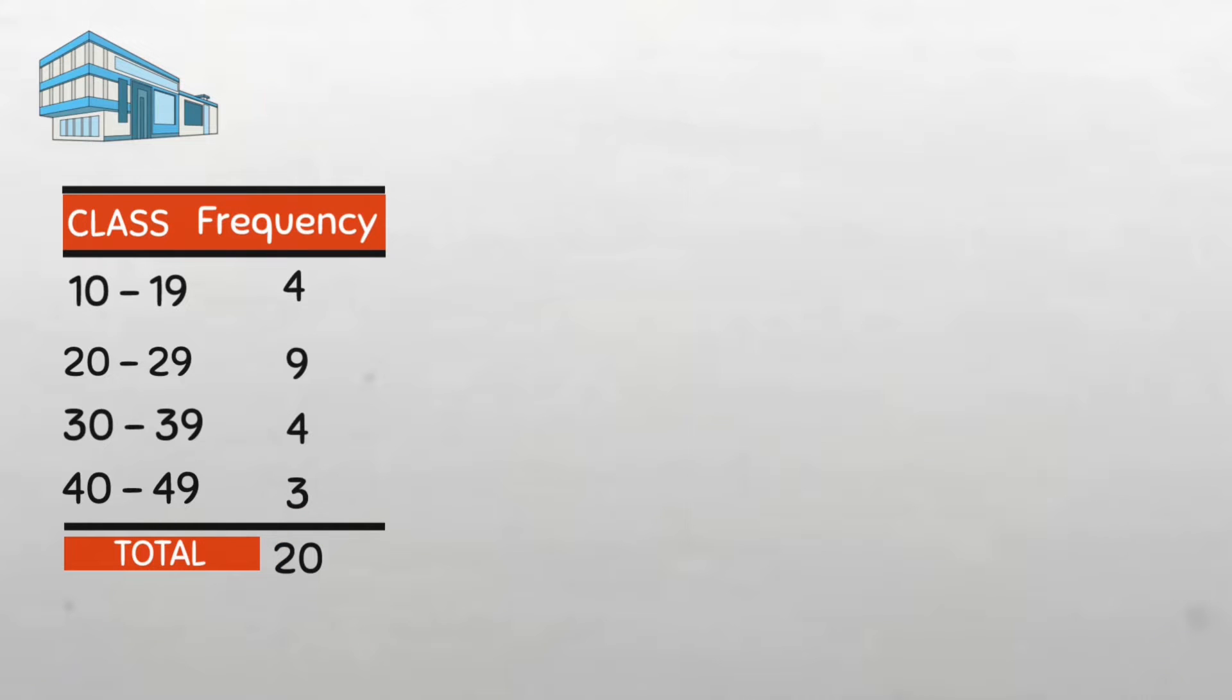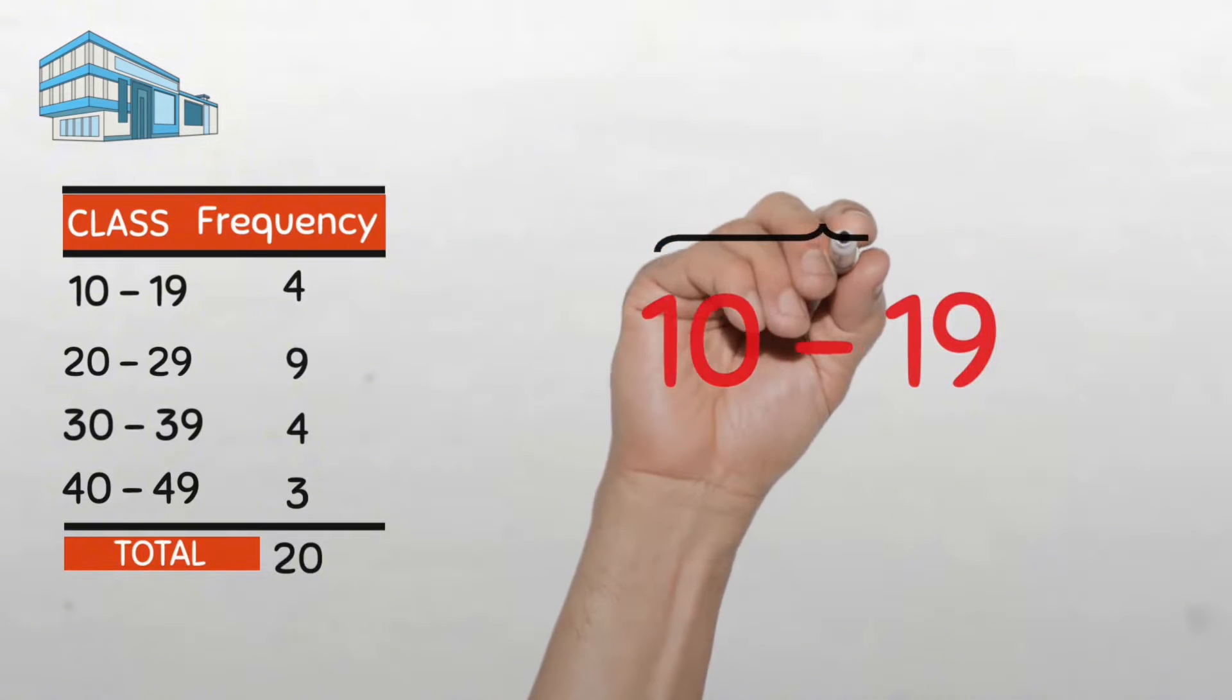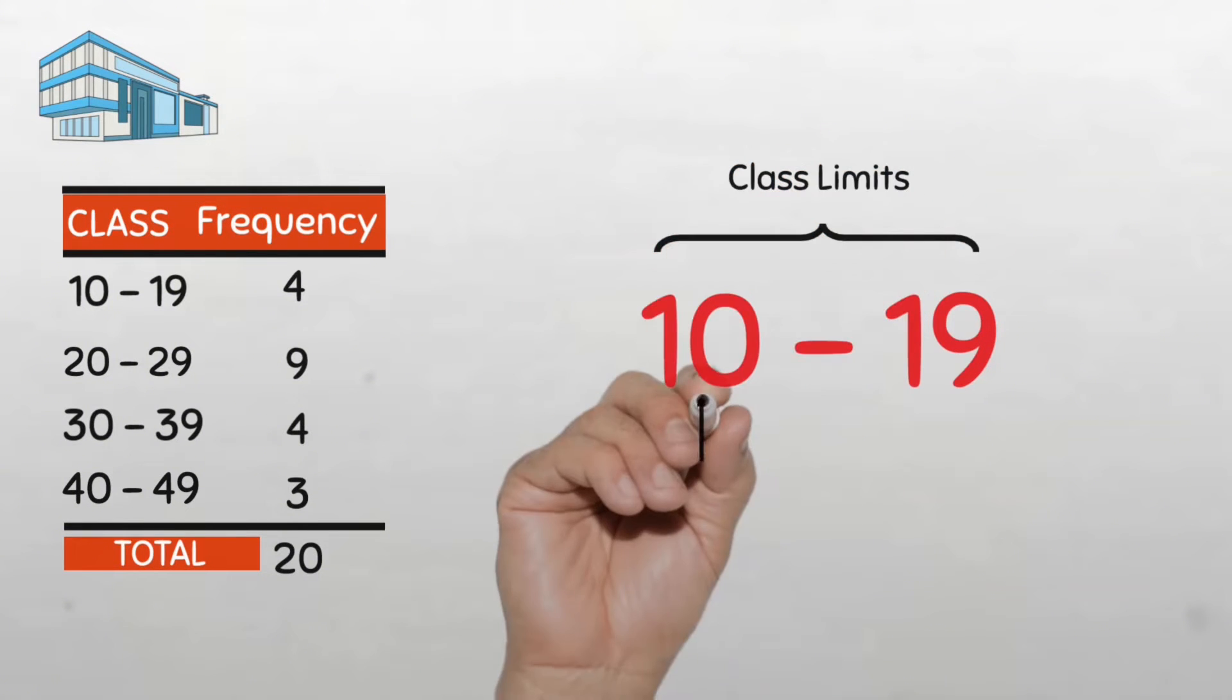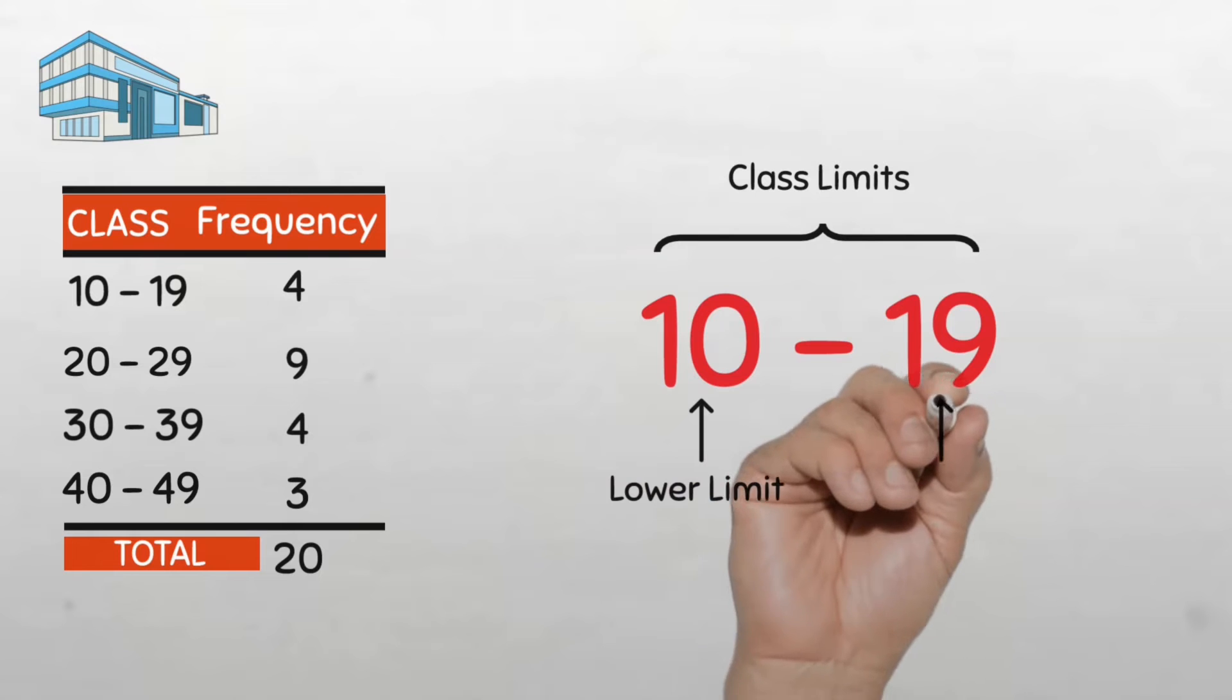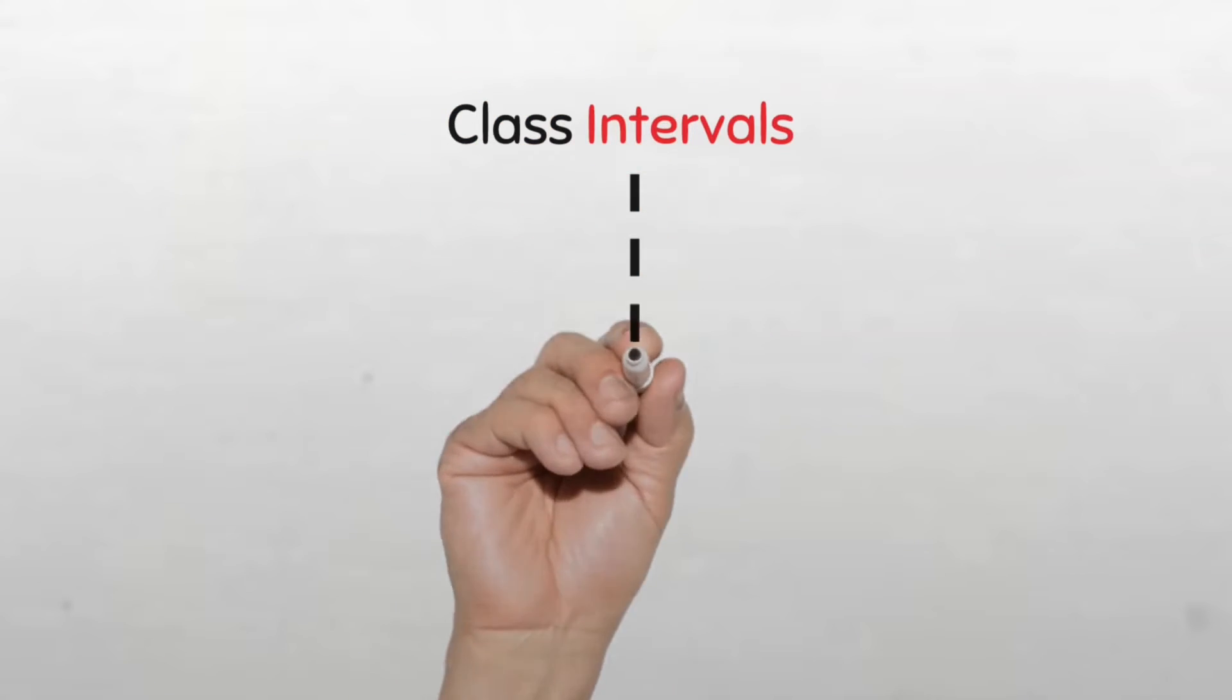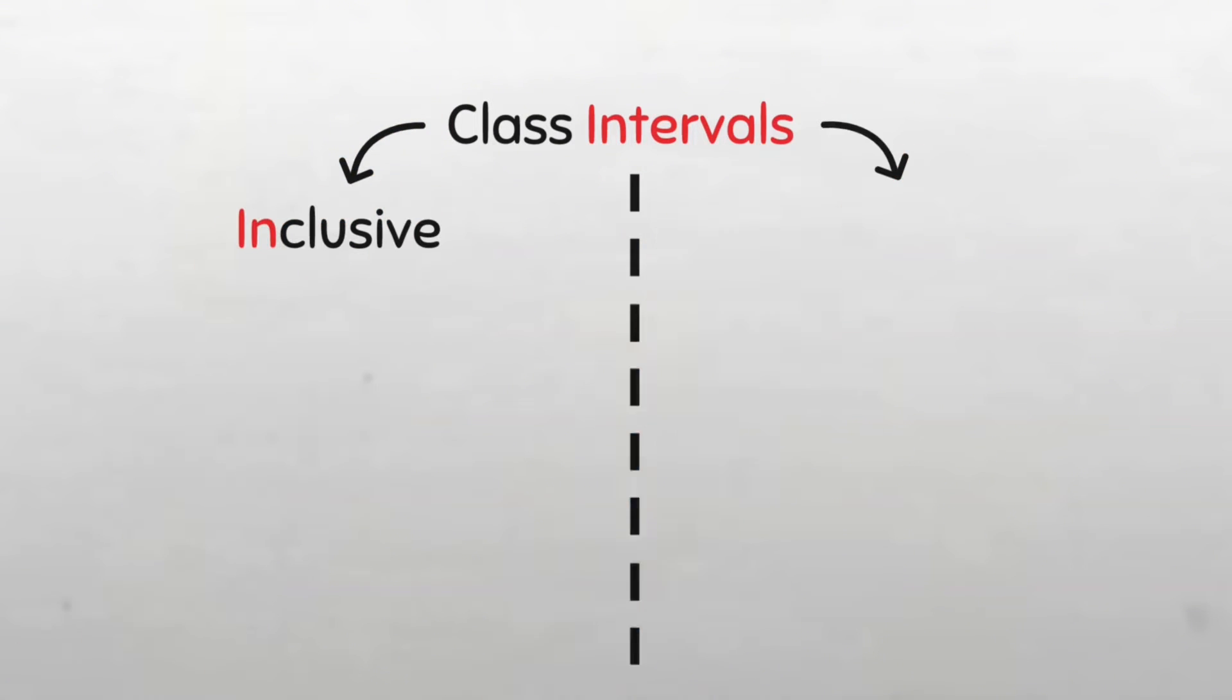Now, if we look at the classes, we see that each class is usually specified by two extreme values called the class limits. The smaller one is called the lower limit, while the larger one is the upper limit of the class. Now, there are two types of classes that we can create for a frequency distribution. We can either have the inclusive type or the exclusive type.